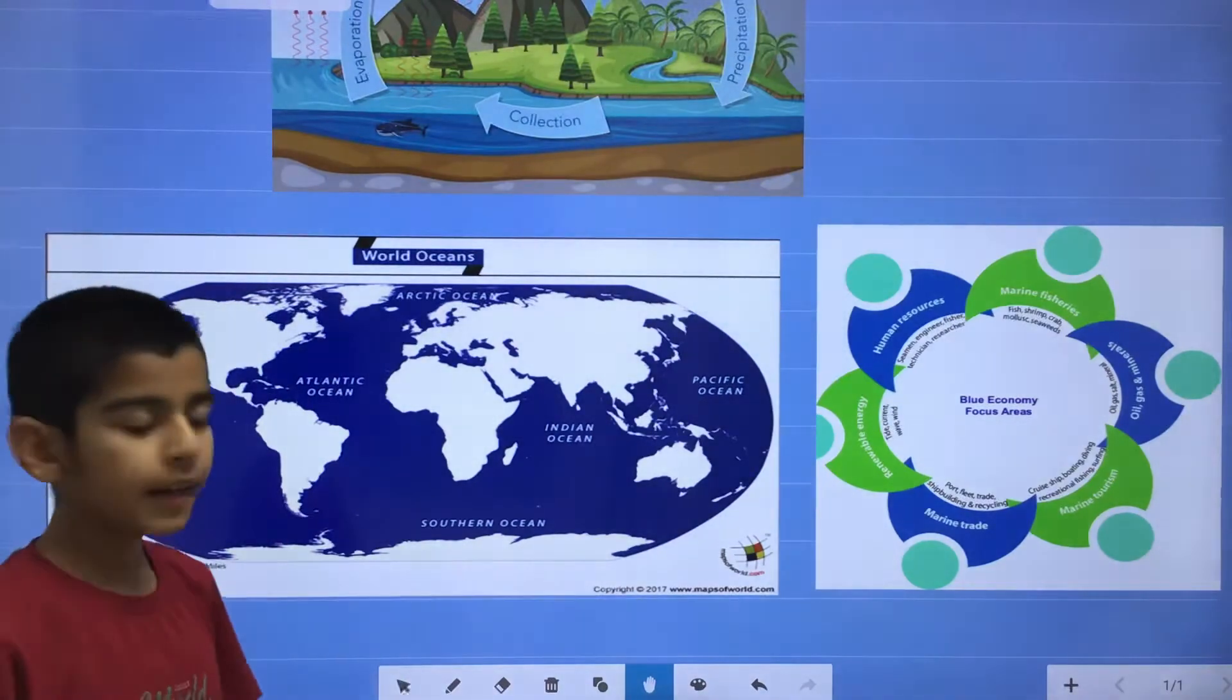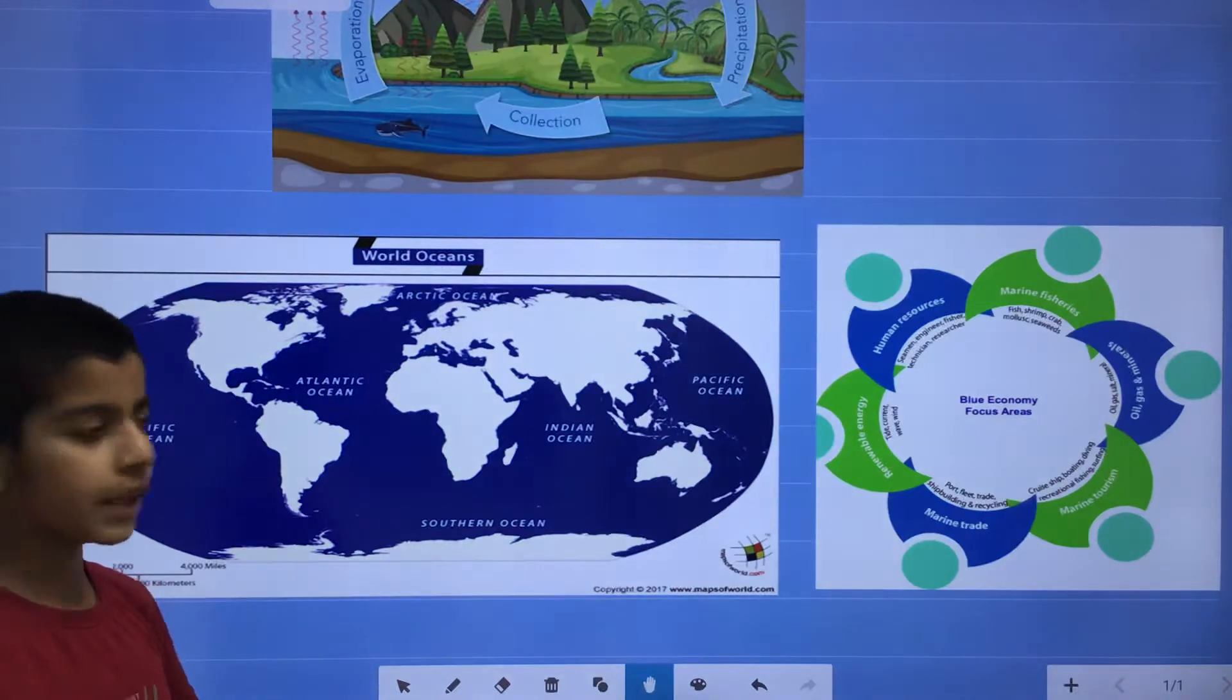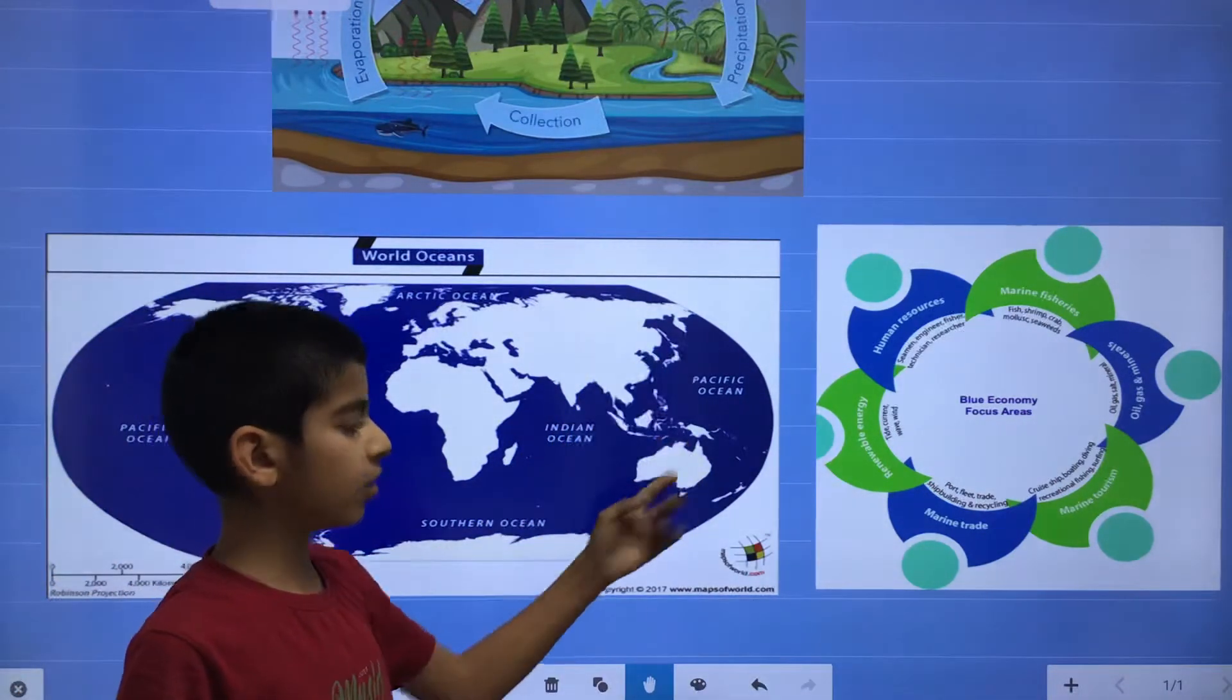And the Pacific Ocean is located in East, there is South America and North America. And in West, there is Asia and Australia.